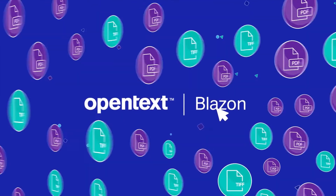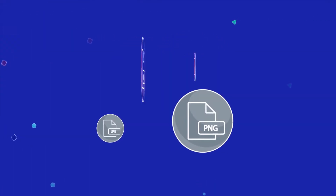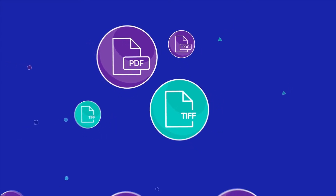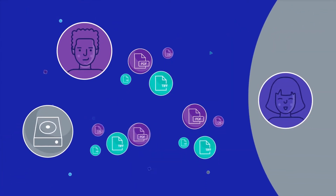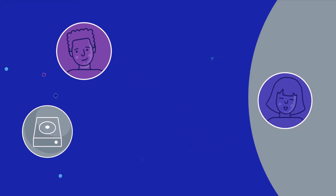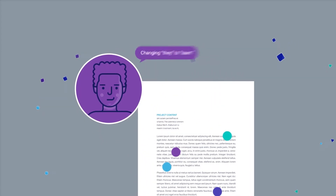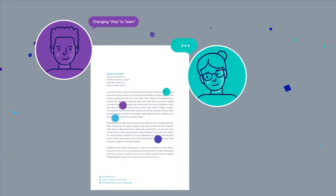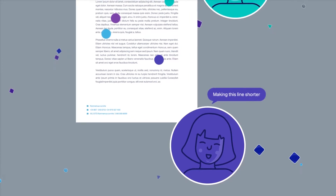Once set up, BlazeOn runs automatically in the background, converting practically any file into PDF or TIFF renditions. Once the documents are converted, they are ready to archive or share inside and outside of your organization. BlazeOn can even burn in markups and comments created in OpenText Brava Enterprise to conveniently collaborate with outside parties.